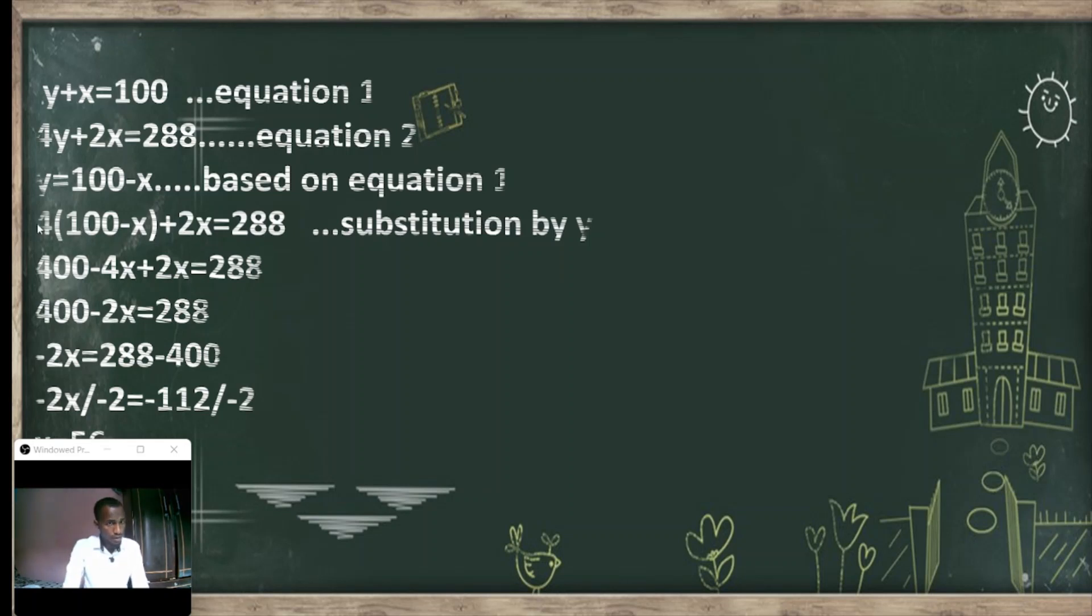We make 4 times 100 equals 400, 4 times x is 4x. So 400 minus 4x plus 2x equals to 288. Minus 4x plus 2x, that's minus 2x. We take 400 to the right side, then it will be 288 minus 400.